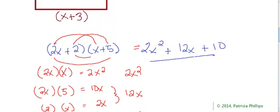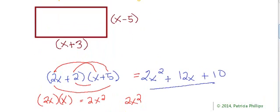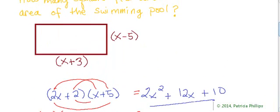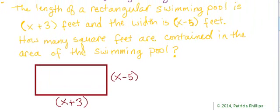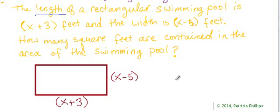Let's do one word problem quickly. The length of a rectangular swimming pool is (x + 3) feet and the width is (x - 5) feet. How many square feet are contained in the area of the swimming pool?